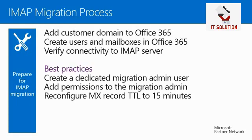You can also use the Test-MigrationServerAvailability cmdlet in the Exchange Management Shell to verify connectivity. You may have to open ports in the firewall so that network traffic from the Microsoft Data Center is allowed to reach the IMAP server. Best practice is to create a dedicated migration admin user, assign sufficient permissions so that user can access mailboxes in the IMAP organization, and the credentials in the CSV file must have the necessary permissions.